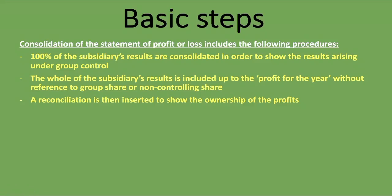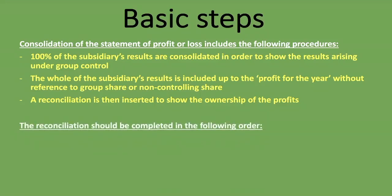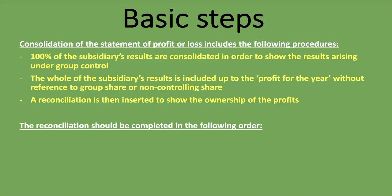What we are doing is adding together the parent's and the subsidiary's figures from revenue all the way to profit for the year. After that, we do a reconciliation where we show the ownership of the profits. The reconciliation should be completed in the following order after adding together everything up to the profit for the year.